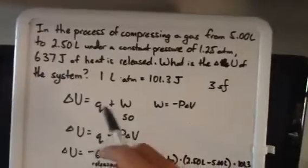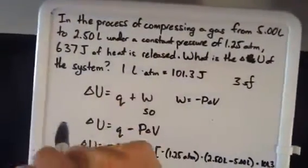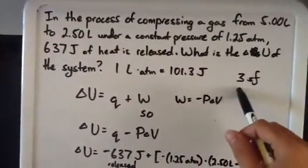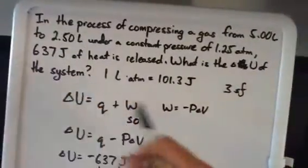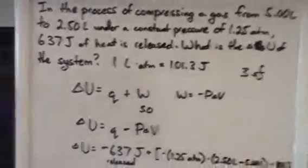The first thing I like to do whenever I'm calculating things out is find out how many sig figs my answer will have. Here I have three, here I have three, three, three—chances are my answer will be three sig figs.